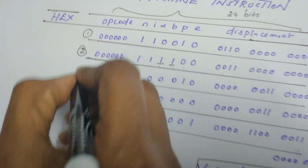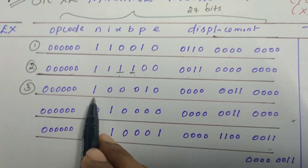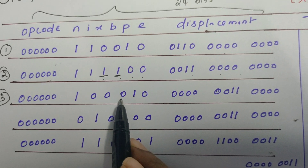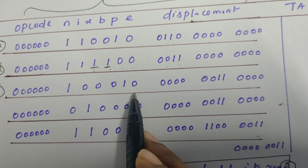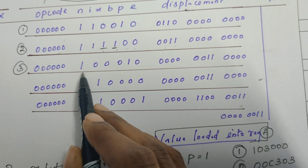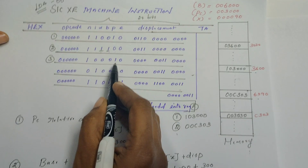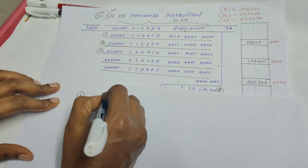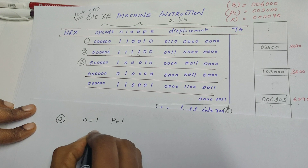In the third instruction, n=1 but i=0. x=0, b=0, p=1, e=0. When n=1 it is indirect addressing mode, and since p=1 it also refers to PC relative addressing mode. So the third instruction uses PC relative plus indirect addressing mode.